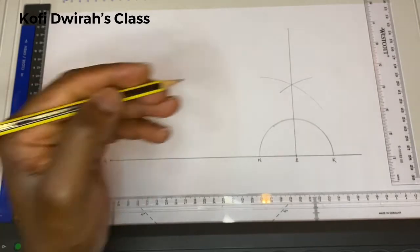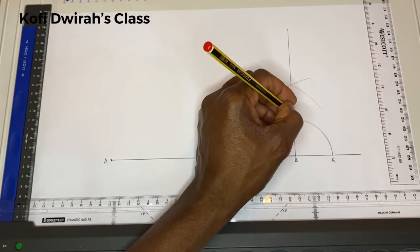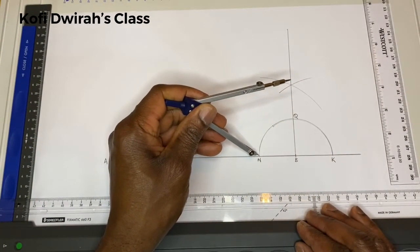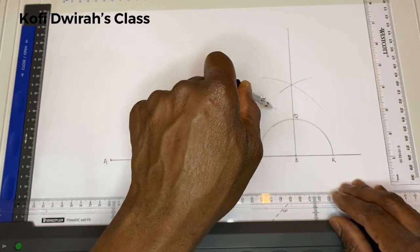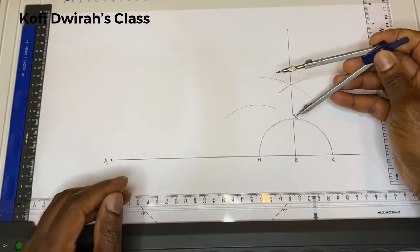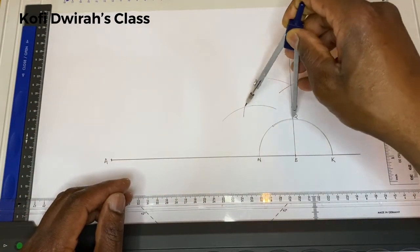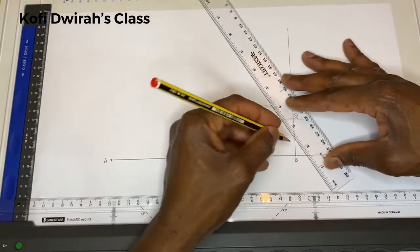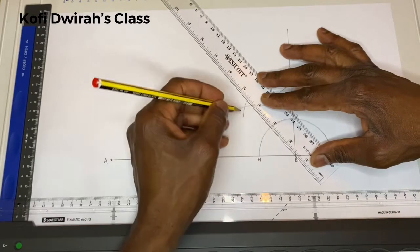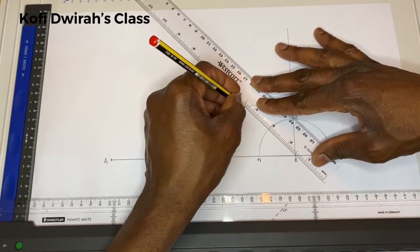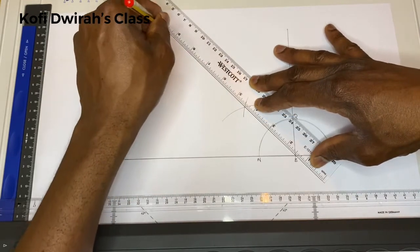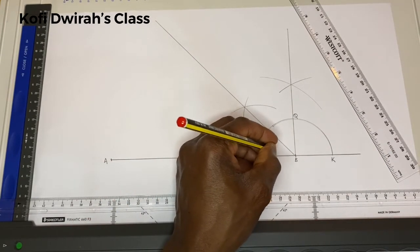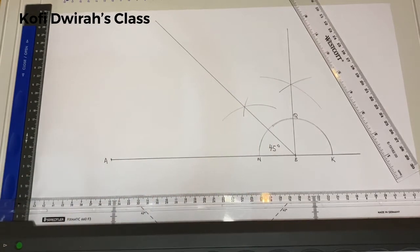We name the top of the perpendicular as point Q. At point N, you draw an arc, then at point Q you draw another arc. Draw your line from point B through the intersection to get the 45 degree angle. We now have 45 degrees at B.